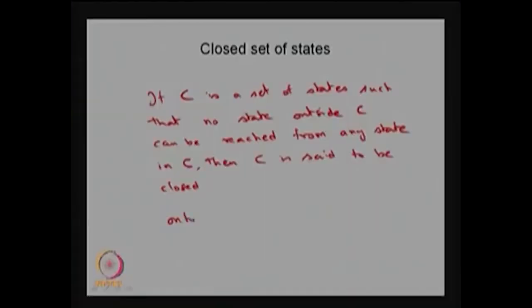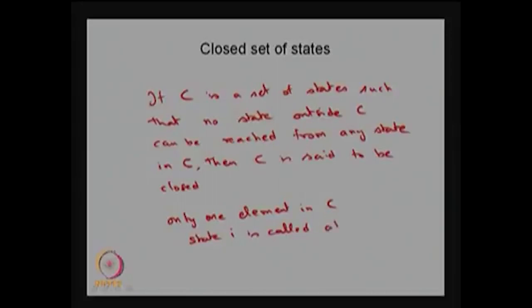A class may have only one element or more than one element. If any closed communicating class has only one element — meaning you cannot include one more state to make it a closed or communicating class — then that state is called an absorbing state. A state i is said to be an absorbing state if it forms a closed communicating class which has only one element.